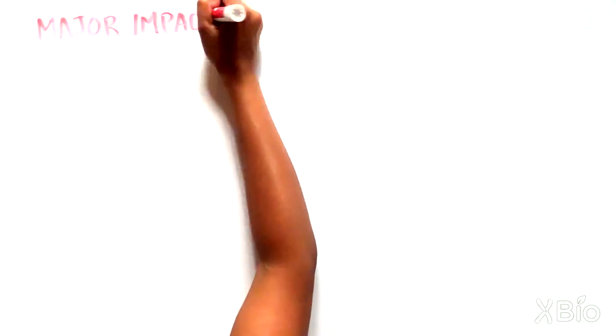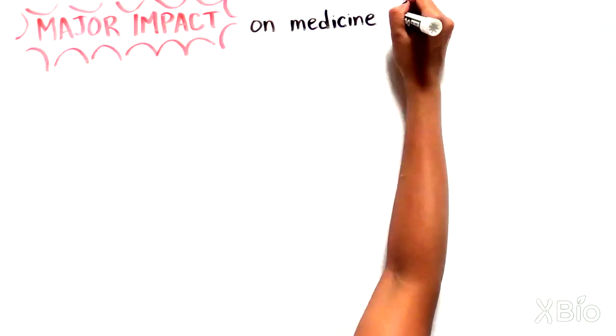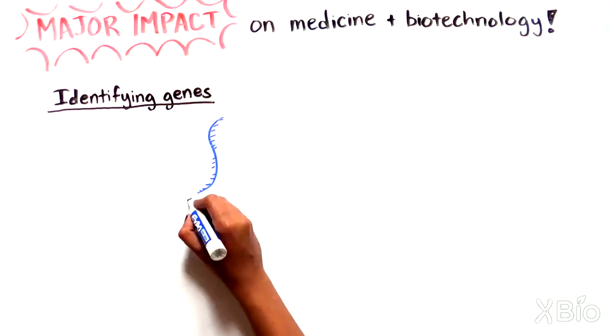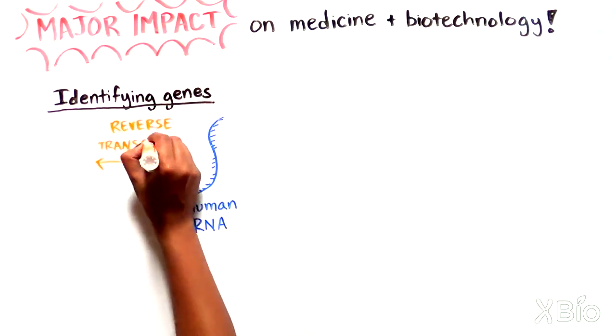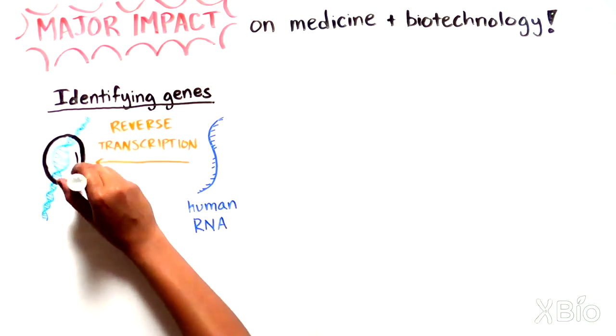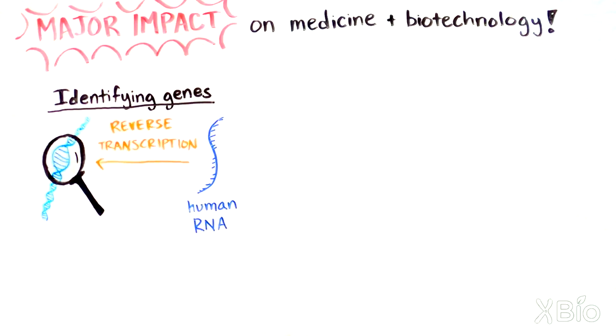Baltimore and Temin's finding had a major impact on modern medicine and biotechnology. Before the modern genomic era, the identification of most human genes involved copying human RNA into DNA by reverse transcriptase to be used for further studies.